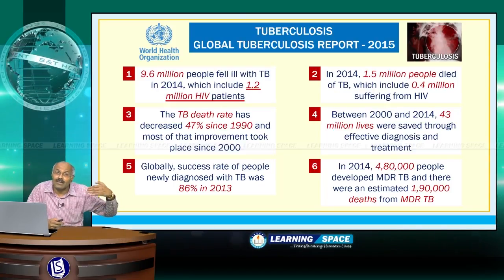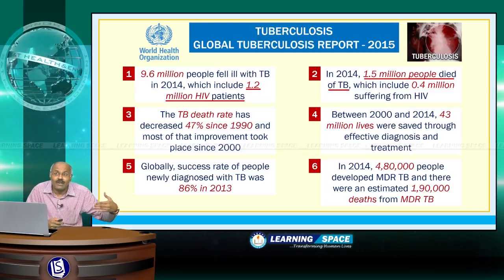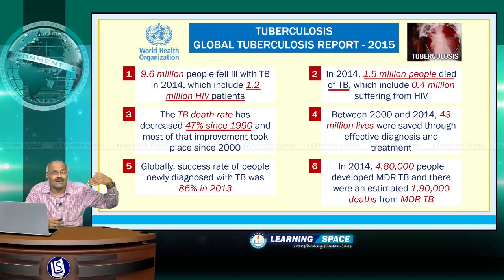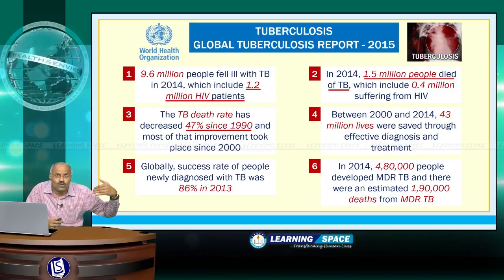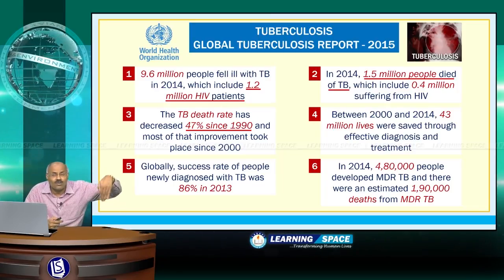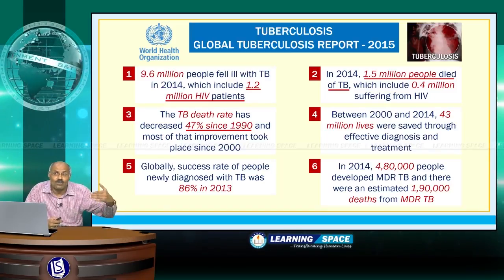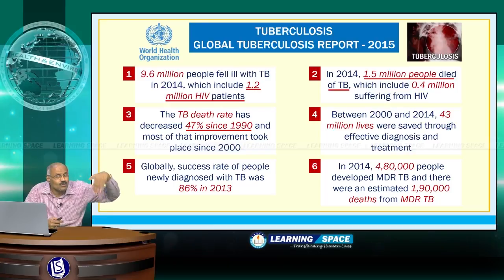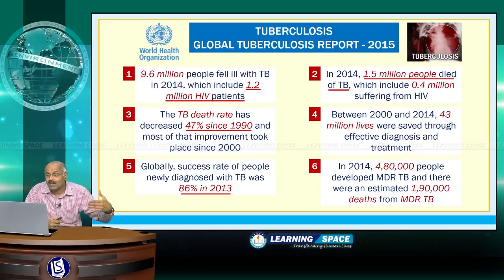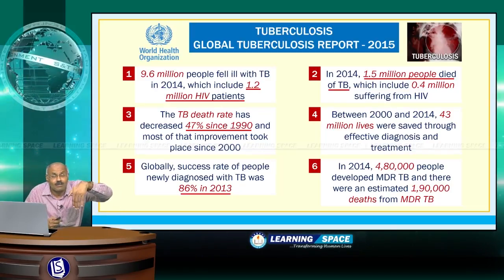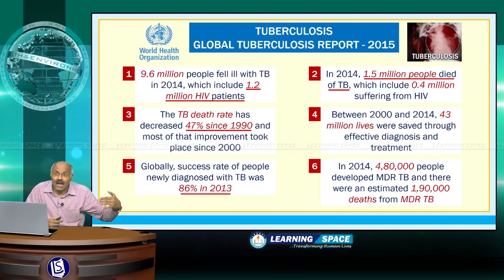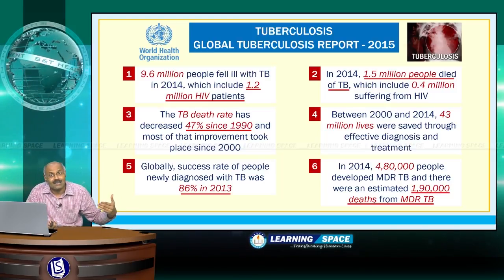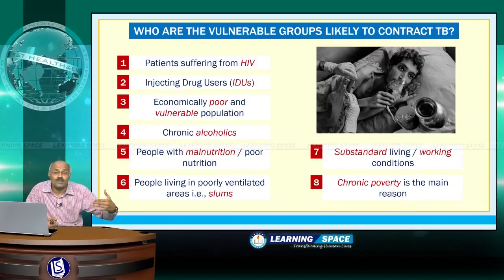In 2014, 1.5 million people died of TB, which includes 2.4 lakh suffering from HIV. The tuberculosis death rate decreased 47% since 1990. Between 2000 and 2014, 43 million lives were saved through effective diagnosis and treatment. The global success rate for newly diagnosed tuberculosis was 86% in 2013. In 2014, 4,80,000 people developed multi-drug resistant tuberculosis and there were an estimated 1,90,000 deaths from MDR-TB.